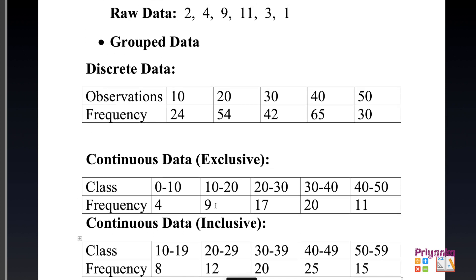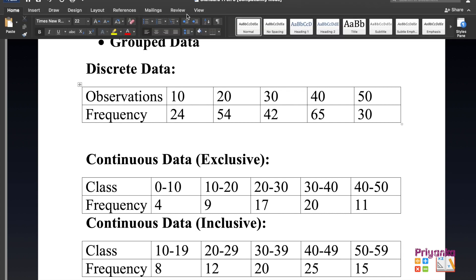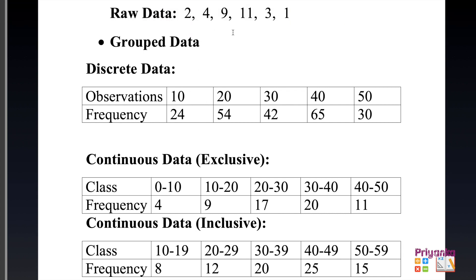It is very important to understand which kind of data is given, because the formula used for median, decile, percentile, and quartile depends on it. Raw data looks like plain numbers; discrete grouped data has single observations with frequency; continuous data depends on whether the class shown is exclusive or inclusive.